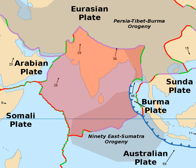The westerly side of the Indian plate is a transform boundary with the Arabian plate called the Owen Fracture Zone, and a divergent boundary with the African plate called the Central Indian Ridge. The northerly side of the plate is a convergent boundary with the Eurasian plate forming the Himalaya and Hindu Kush Mountains.